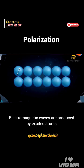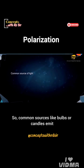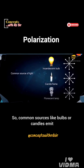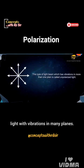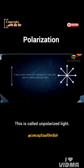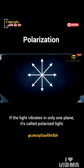Electromagnetic waves are produced by excited atoms. Different atoms vibrate in different directions, so common sources like bulbs or candles emit light with vibrations in many planes. This is called unpolarized light. If the light vibrates in only one plane, it's called polarized light.